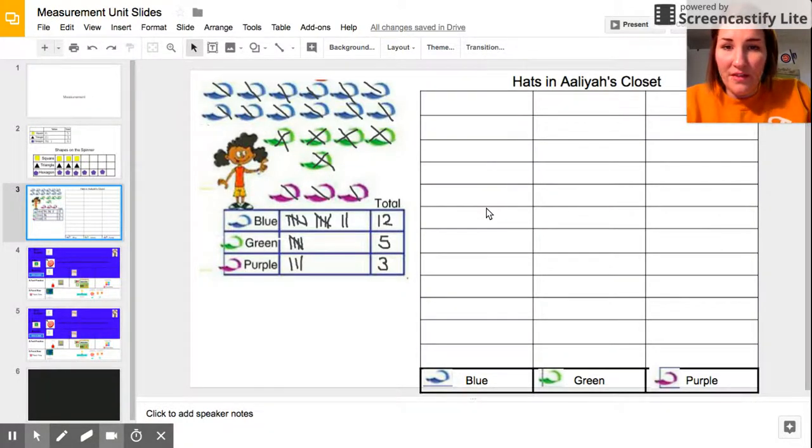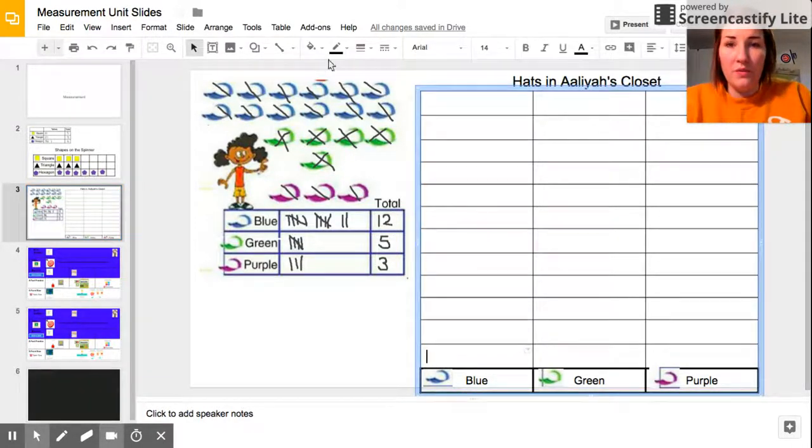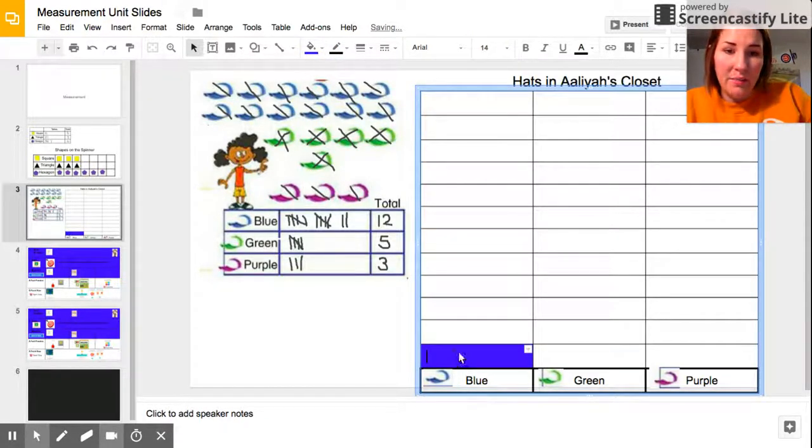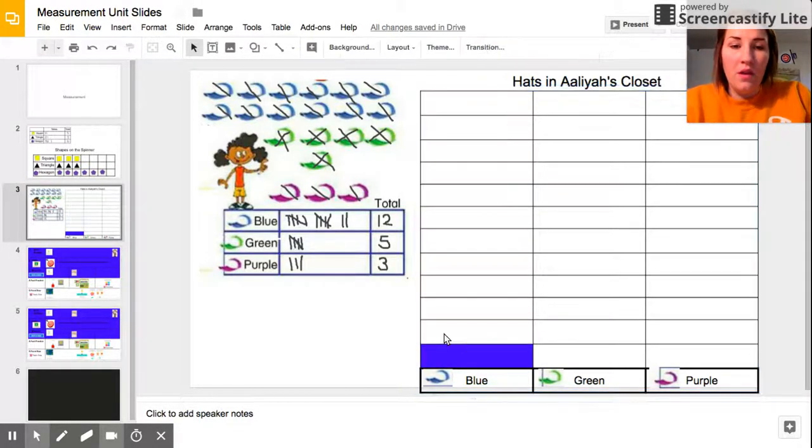Another way that this is going to be different is that we are going to make a bar graph instead of a pictograph. Instead of having pictures of little hats representing each hat that was in her closet, we're going to fill in a box or color in a box for each hat that we find in the closet. Let's start with blue. We did 12 tally marks—we see 5, 10, 11, 12, and we wrote 12 in our total. For each tally mark or each time we found a blue hat, we're going to color in a bar of the graph, one of those rectangles, and we're going to color them in blue.